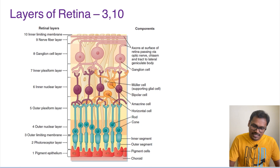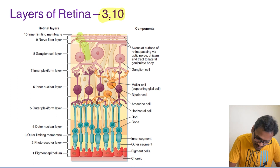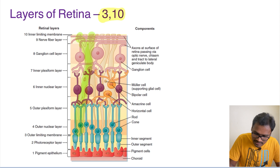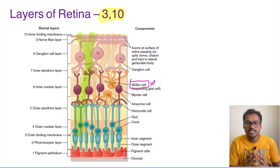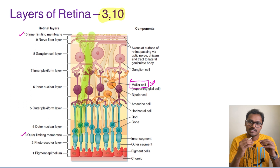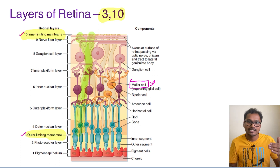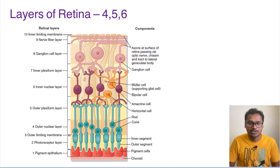Next, we will study layers 3 and 10 together, because both are formed by the same structure: the Müller cell. The Müller cell is like the glial cell of the CNS — it is the supporting glial cell for the retinal layers. The Müller cell extends all the way from layer 3 to layer 10. During its extension, it forms a thin membrane-like separating structure: at layer 3 this is called the outer limiting membrane, and at layer 10 it is called the inner limiting membrane.